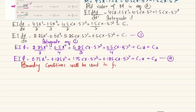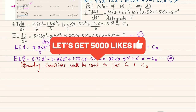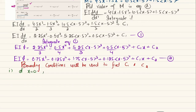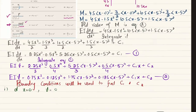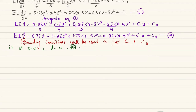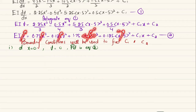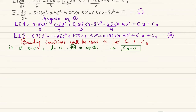First boundary condition: at x = 0, deflection v = 0 (pin support at A). Substituting into equation (2), all terms vanish — Macaulay bracket terms with negative arguments equal zero — leaving only C2 = 0.